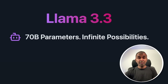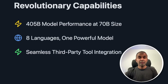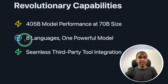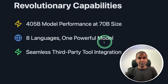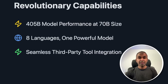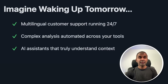Meta just released Llama 3.3, a 70 billion parameter model with infinite possibilities and revolutionary capabilities. The performance is similar to the Llama 3 405 billion parameter model. It supports 8 languages — one powerful model — with seamless third-party tool integration, that is tool calling or function calling.